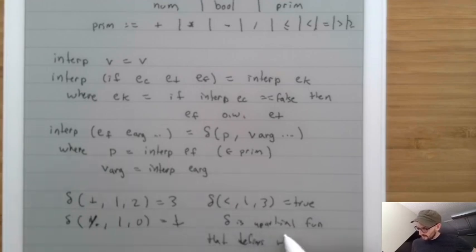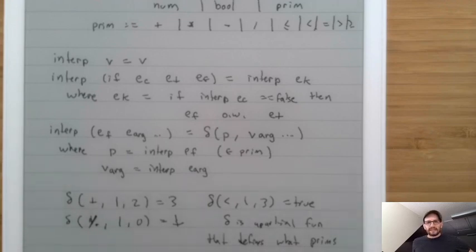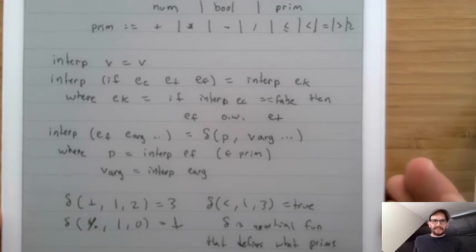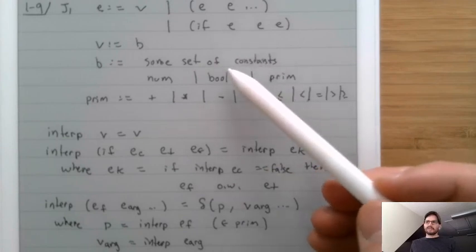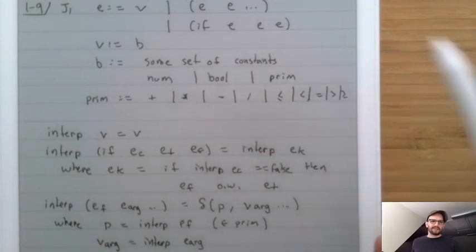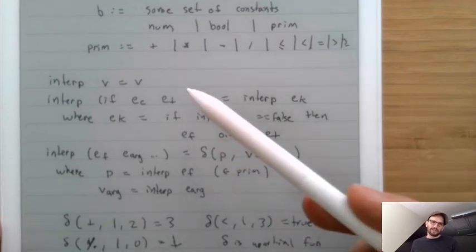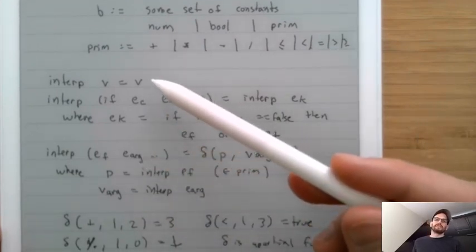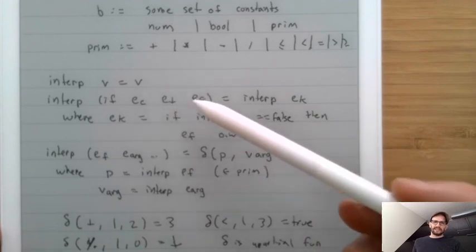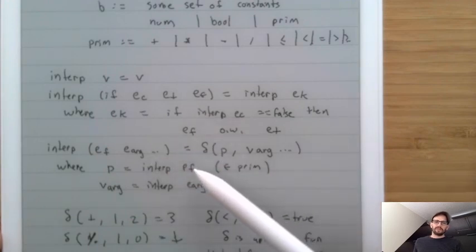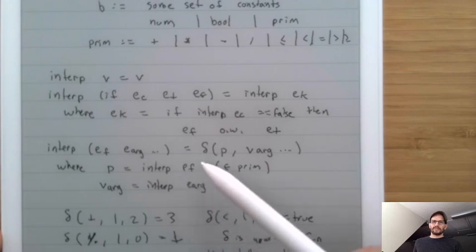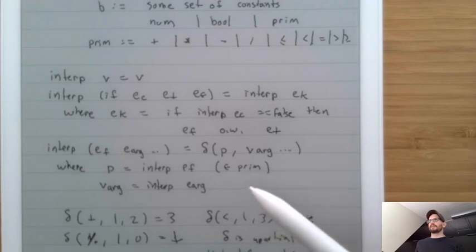The delta function is defined something like: delta(plus, 1, 2) = 3; delta(less-than, 1, 3) = true; delta(divide, 1, 0) = undefined. So delta is a partial function that defines what primitives mean. The idea is that we can focus on J1 and ignore the details of exactly what constants and primitives there are, focusing on just these core three rules: values evaluate to themselves, ifs select one branch, and function calls look up a primitive and apply it.